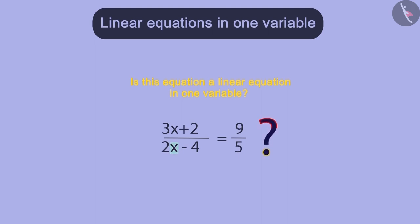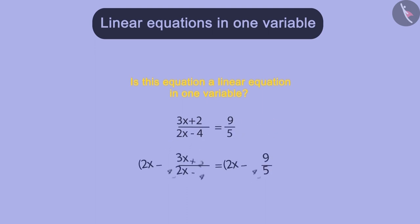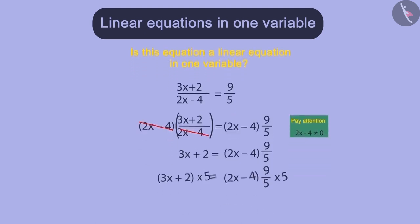How do we do this? We will have to multiply the left and right hand side with 2x minus 4. Thus, these two terms will get cancelled. So, now our equation will look like this. Now, after multiplying both the sides by 5, we will get the equation.